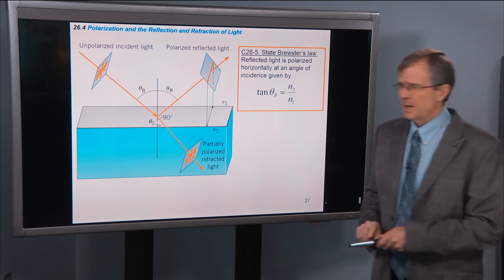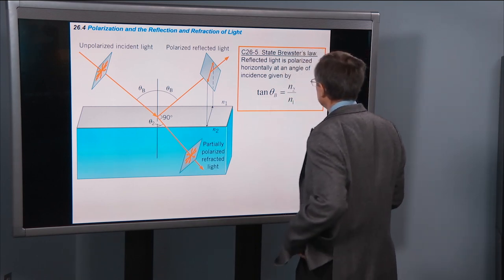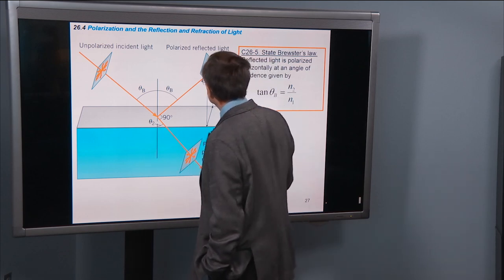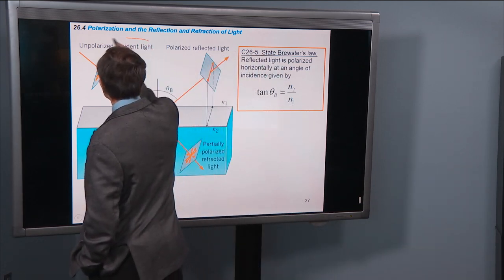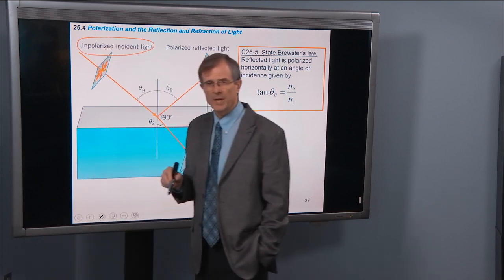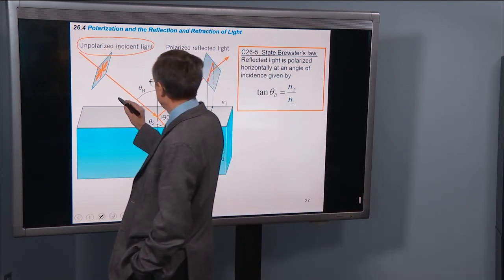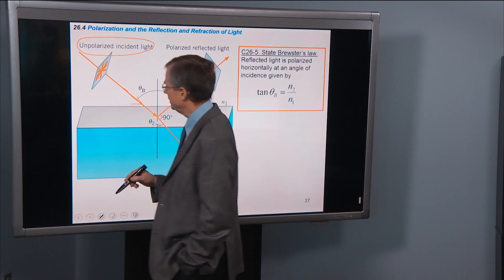Brewster's Law says that here's an incident light ray that's unpolarized. This is the ray shown here in red.